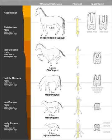The evolution of the horse, a mammal of the family Equidae, occurred over a geologic time scale of 50 million years, transforming the small, dog-sized, forest-dwelling Eohippus into the modern horse. Paleozoologists have been able to piece together a more complete outline of the evolutionary lineage of the modern horse than of any other animal.